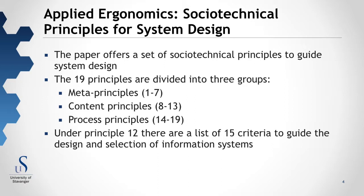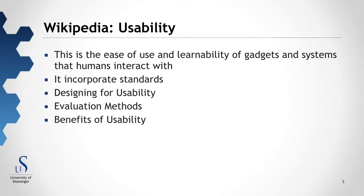The second paper is from the Applied Economics Journal, about socio-technical principles for system design. It offers a set of socio-technical principles to guide system design, describing 19 principles divided into three groups: meta-principles (1 to 7), content principles (8 to 13), and process principles (14 to 19). Under principle 12, there is a list of 15 criteria to guide the design and selection of information systems.